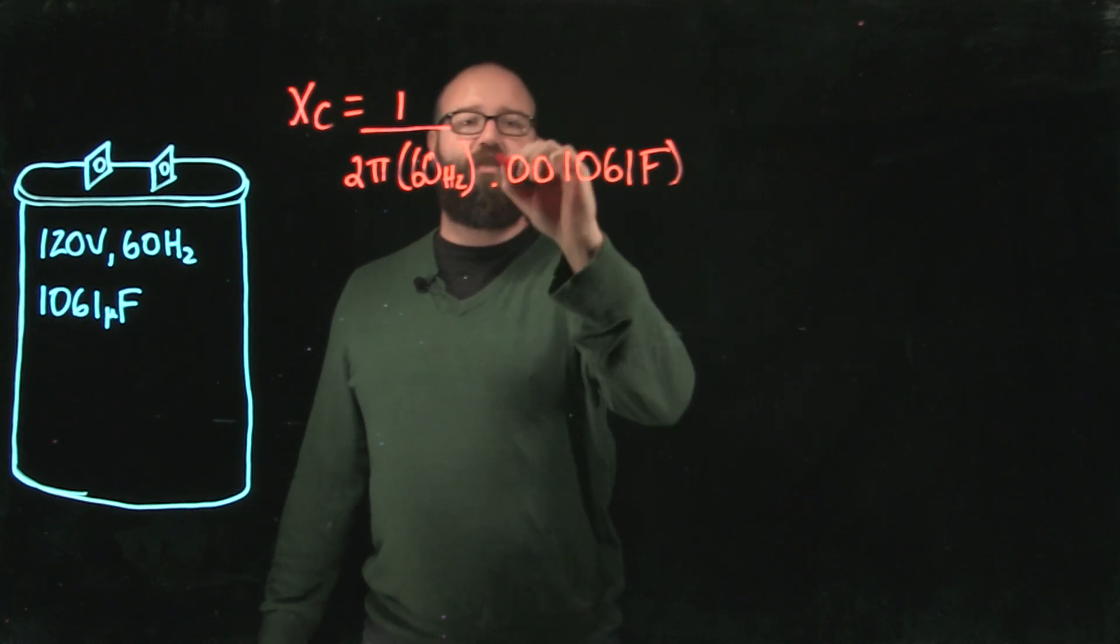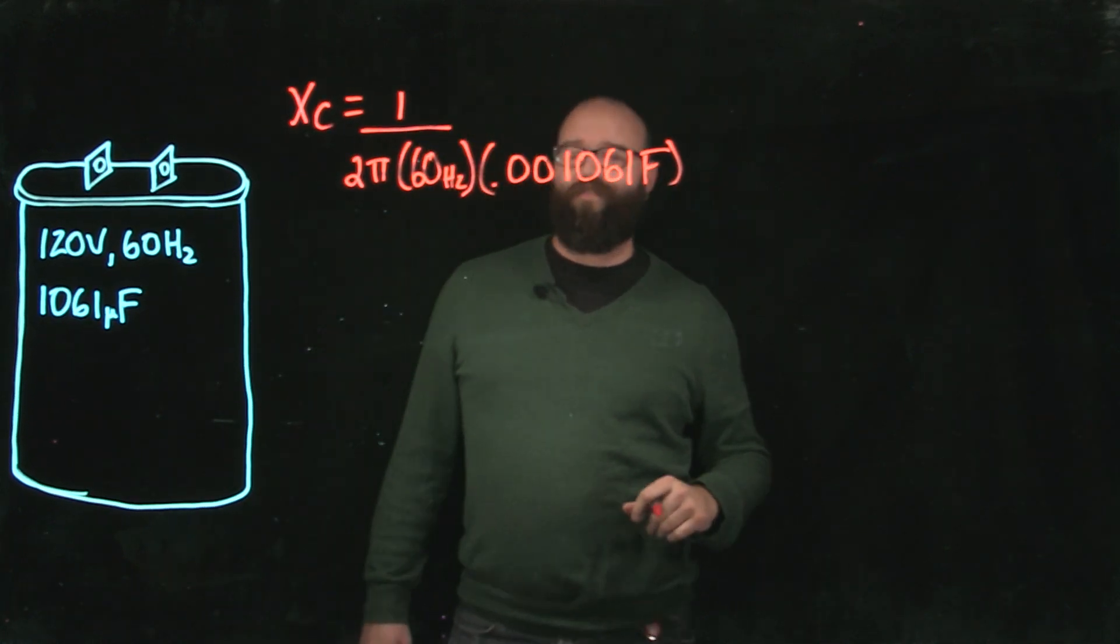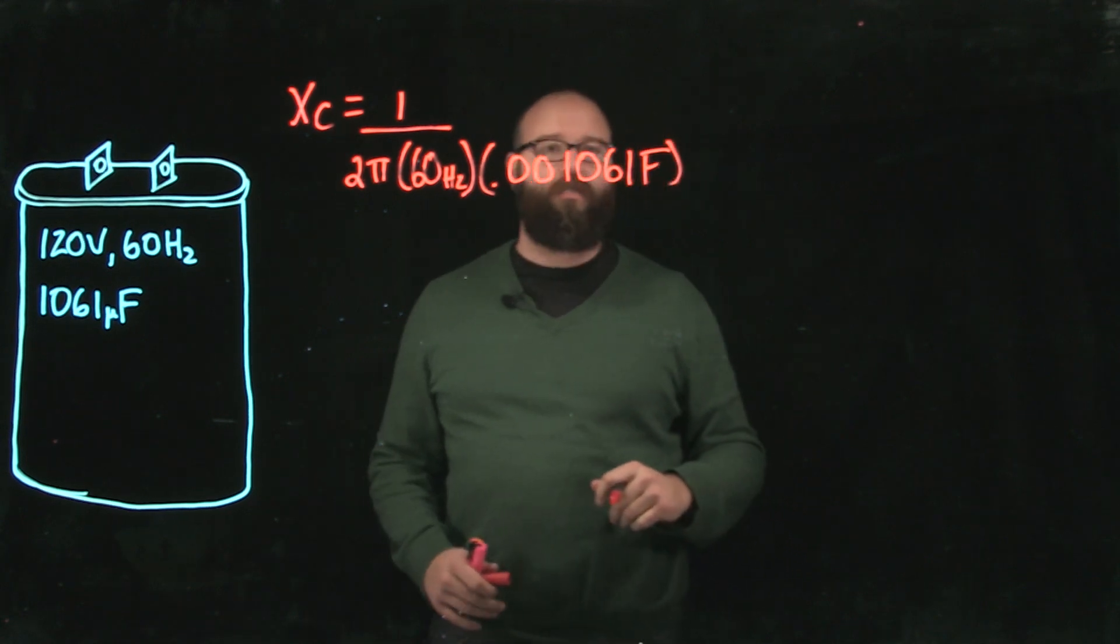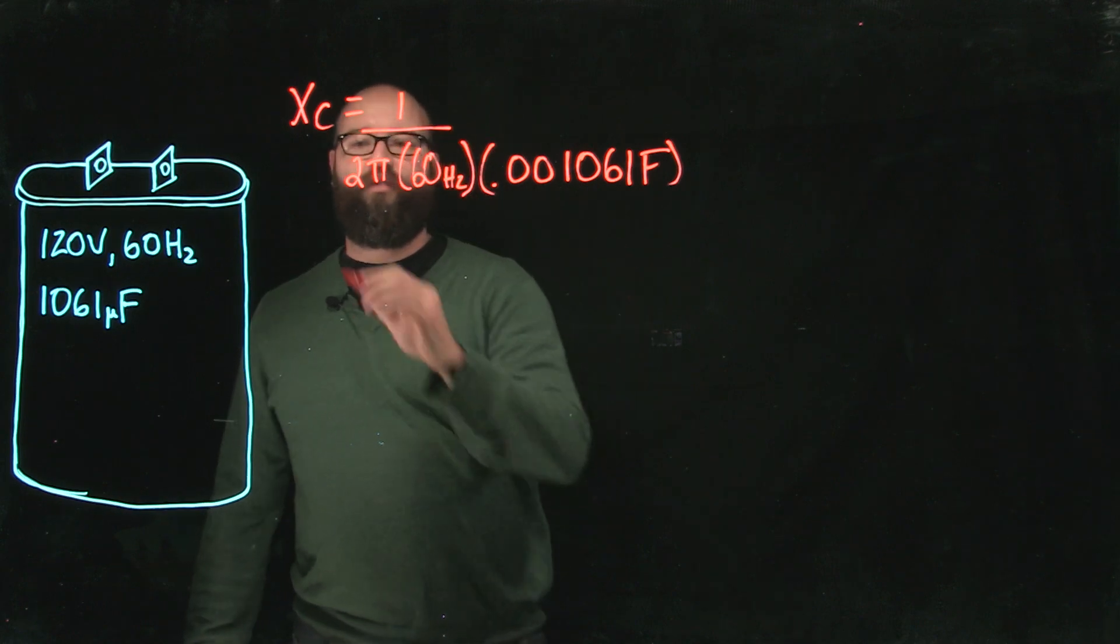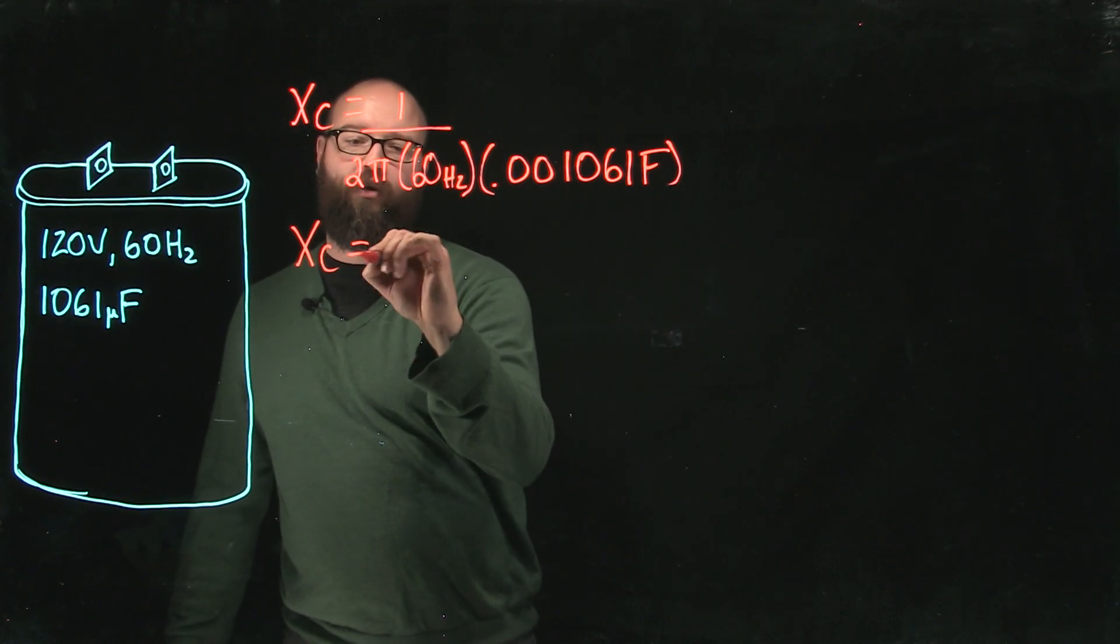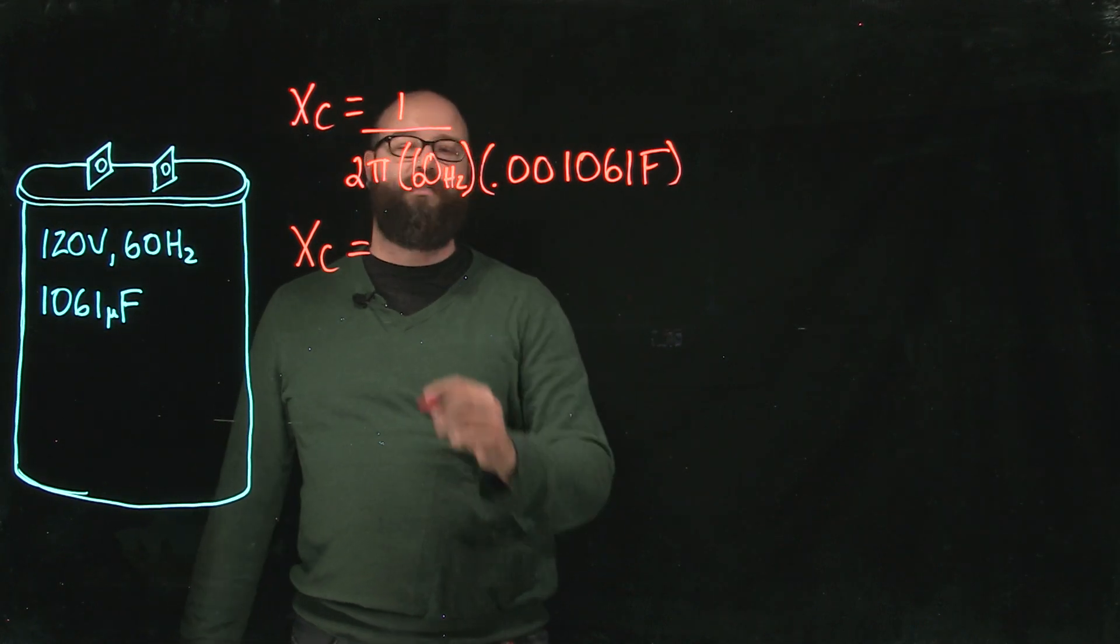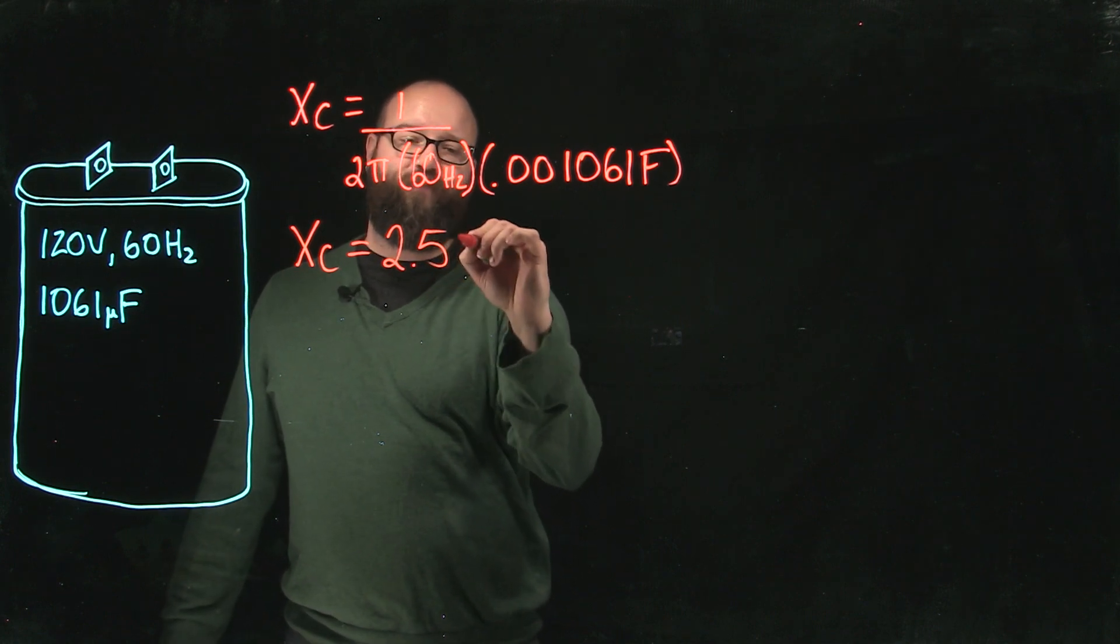And in order to work with this I need to convert that microfarads into farads times 10 to the negative 6 divided by 1000, however you want to do it. Either way this is what we're left with. After we punch that into our calculators we should end up with a capacitive reactance of 2.5 ohms.